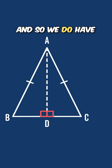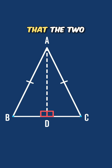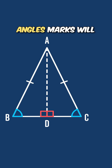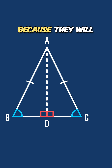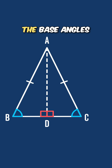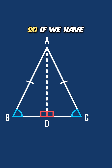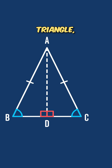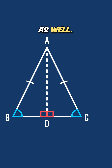So we know these two triangles must be congruent, and therefore the two base angles marked will be equal as well, because they are corresponding angles in those congruent triangles. So if we have equal lengths in an isosceles triangle, then we definitely have equal base angles as well.